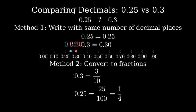0.3 equals 3 tenths, while 0.25 equals 25 hundredths, which simplifies to 1 fourth.